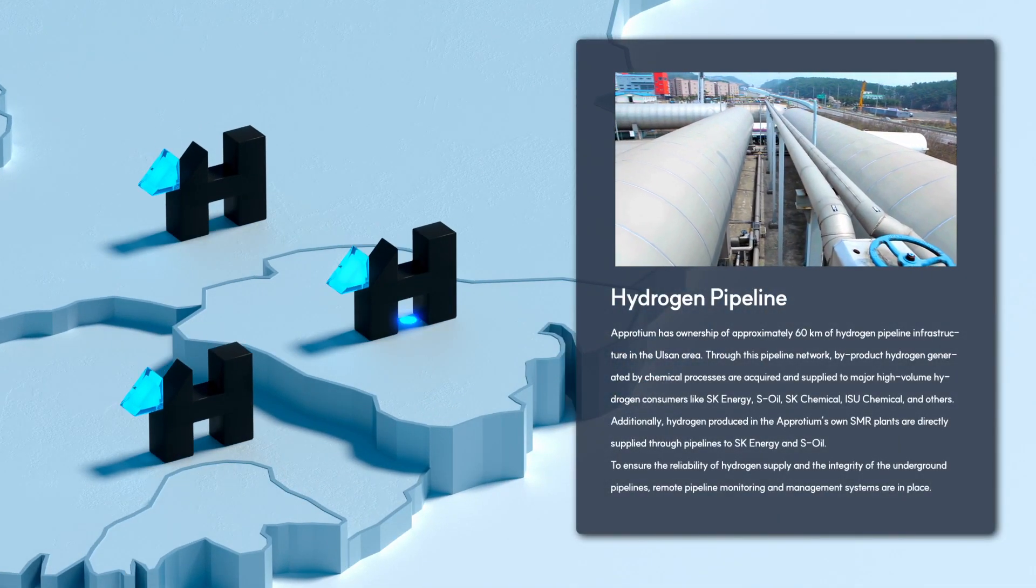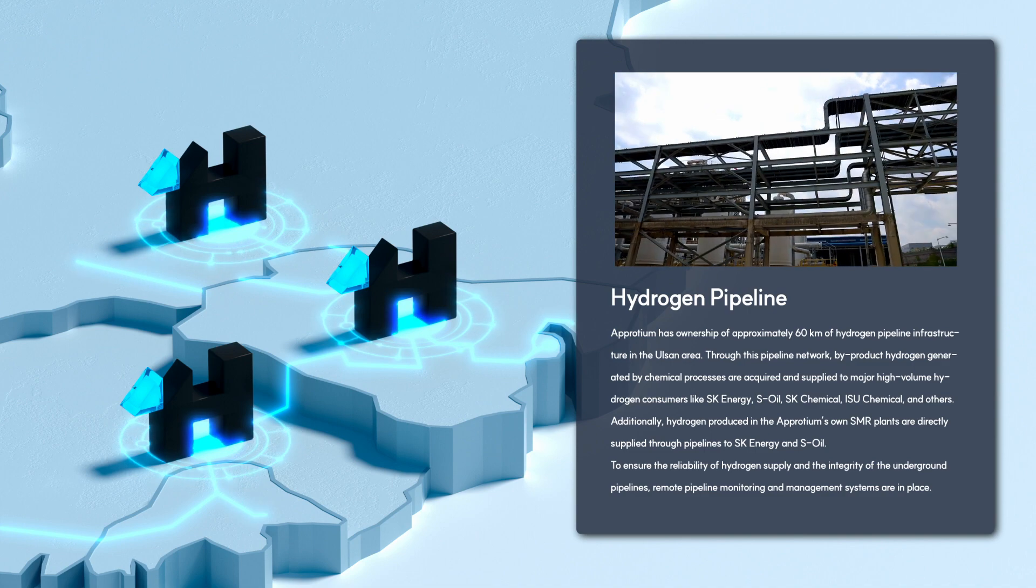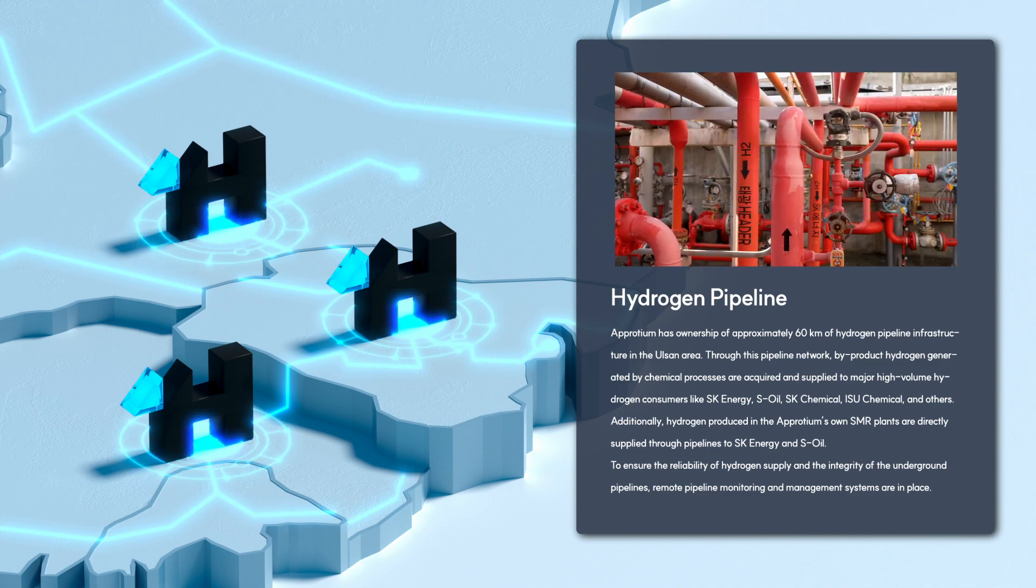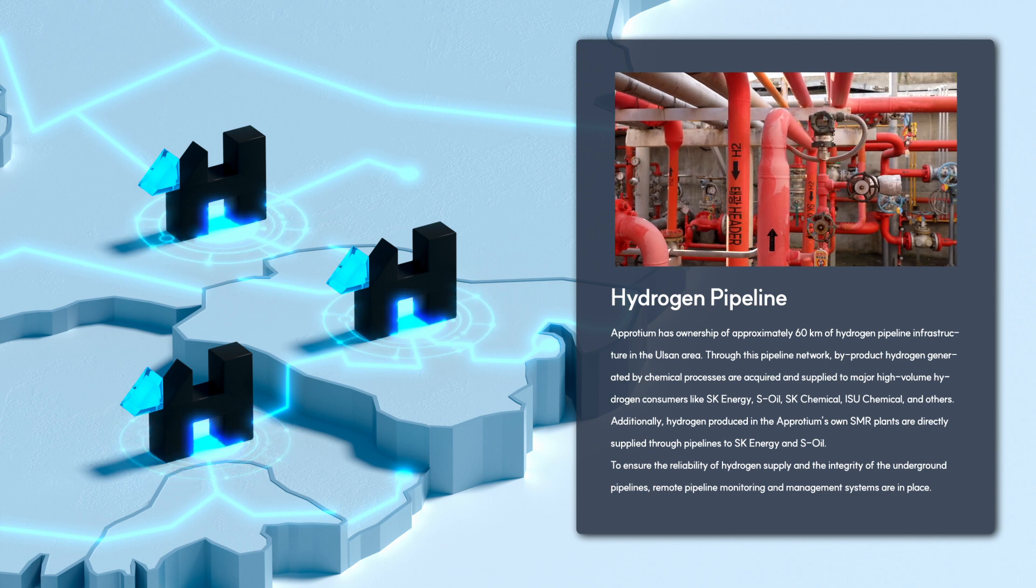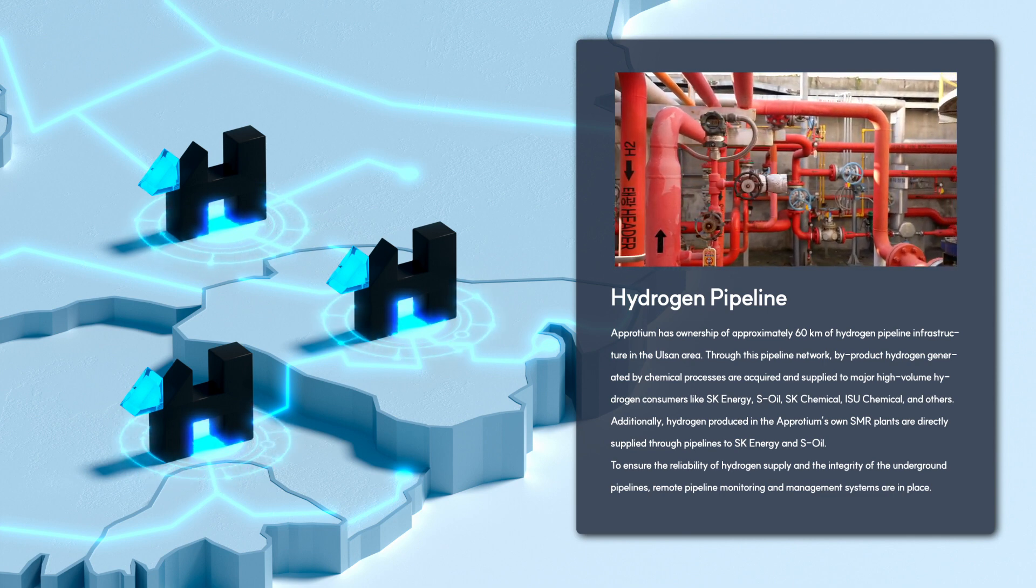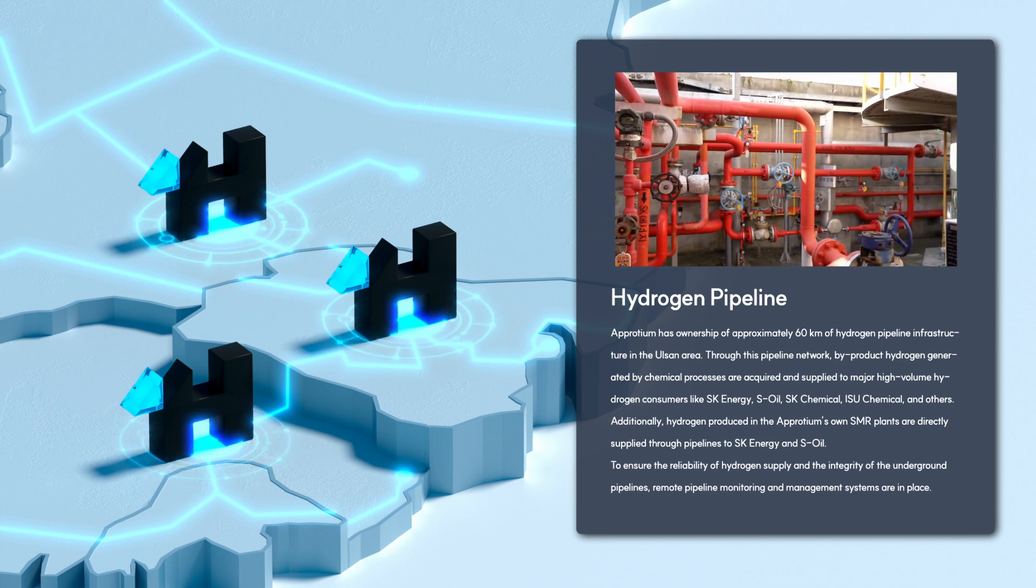Aprodium has ownership of approximately 60 kilometers of hydrogen pipeline infrastructure in the Ulsan area. Through this pipeline network, by-product hydrogen generated by chemical processes is acquired and supplied to major high-volume hydrogen consumers like SK Energy, S-Oil, SK Chemical, ISU Chemical, and others.